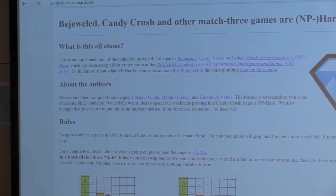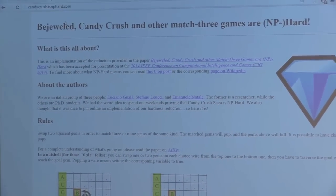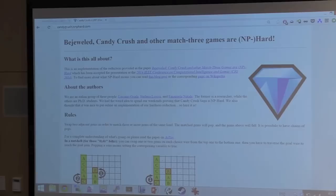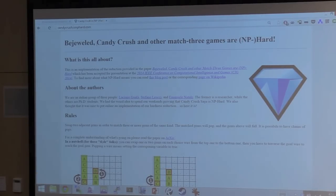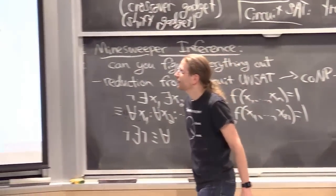Anyway, they also have the greatest URL, candycrush.isnphard.com. We should try to get other things.isnphard.com. And that is Candy Crush and Bejeweled, and all of its friends are NP-hard.